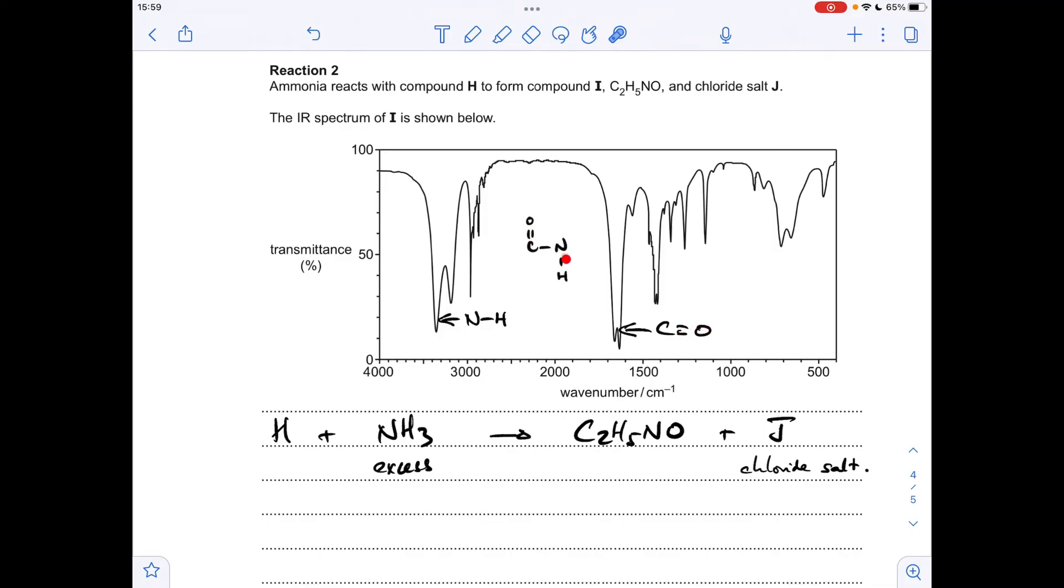If I does have this functional group, then the remaining atoms are a carbon and 4 hydrogens, which would make I this amide here, ethanamide. We don't have to give the name, just the structure. So that's looking like a possible answer for compound I.